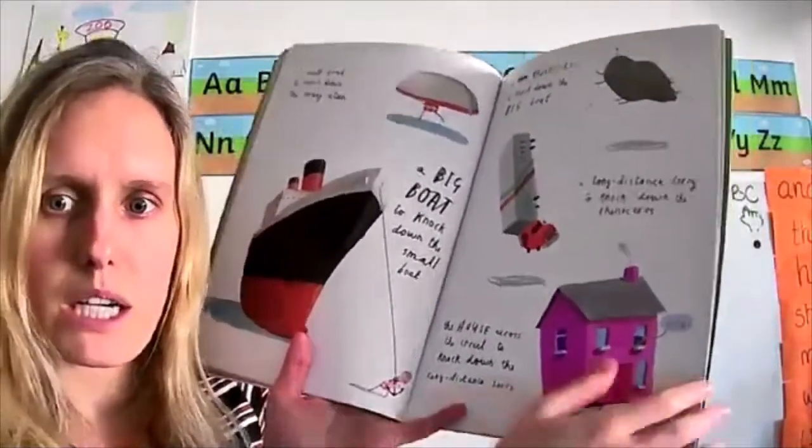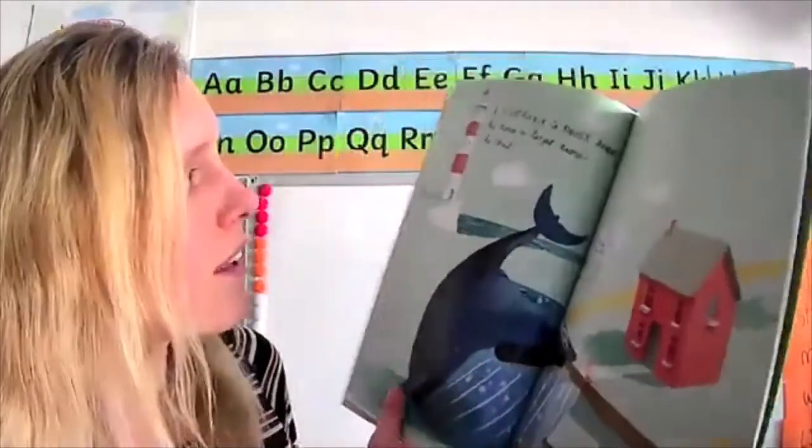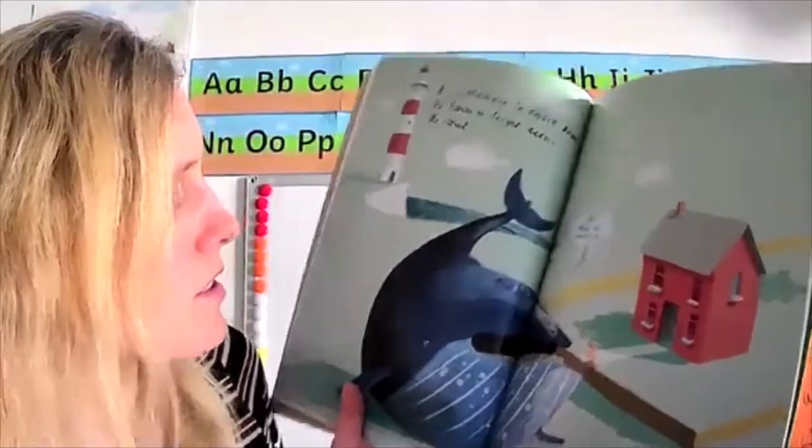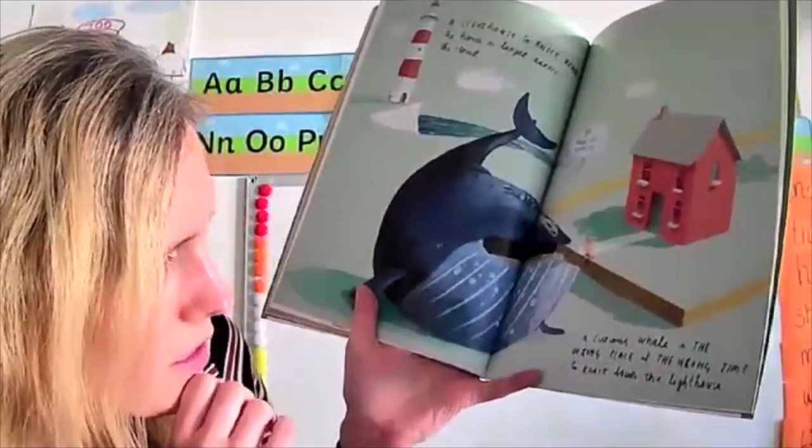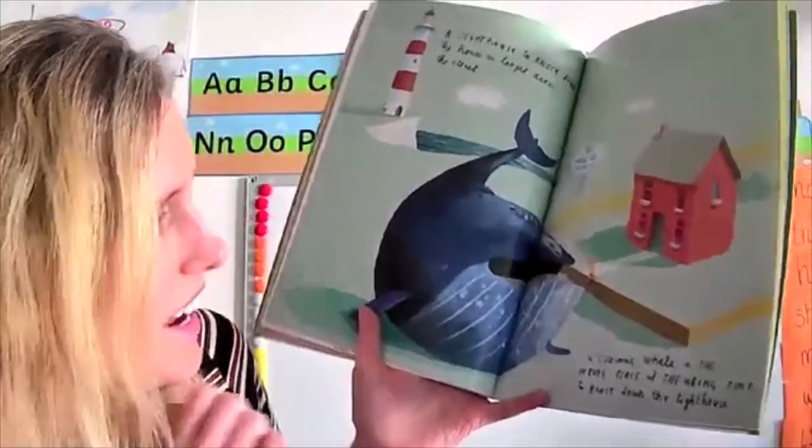Wow Floyd's really throwing lots of things isn't he? The lighthouse knocked down the house no longer across the street. A curious whale in the wrong place at the wrong time to knock down the lighthouse.